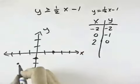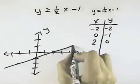Because it's a greater than or equal to, it would be a solid line, as straight as we can make it through those three points.